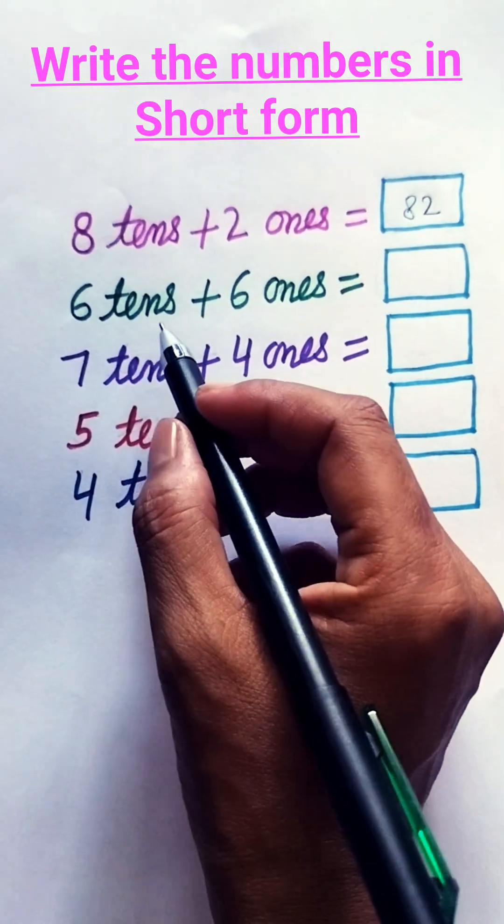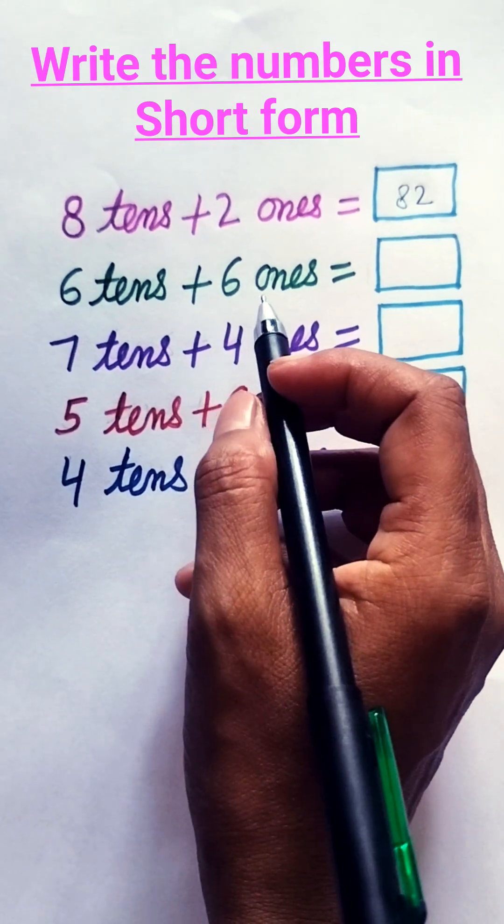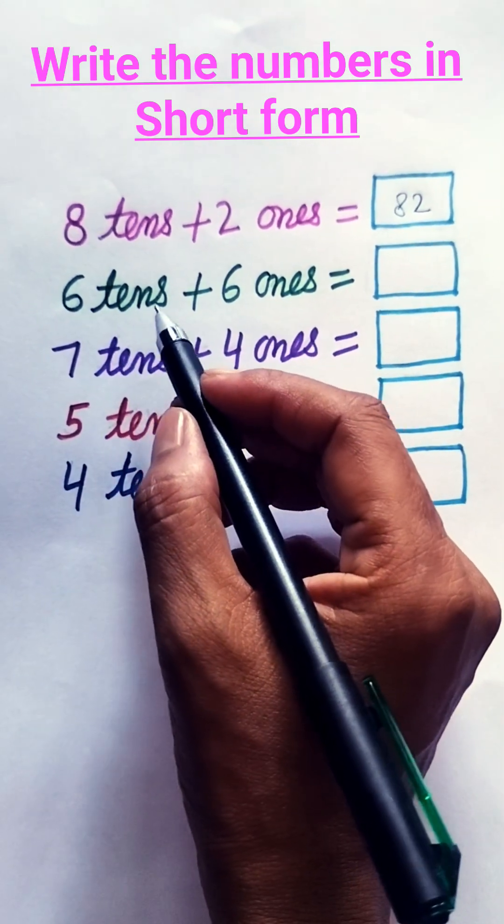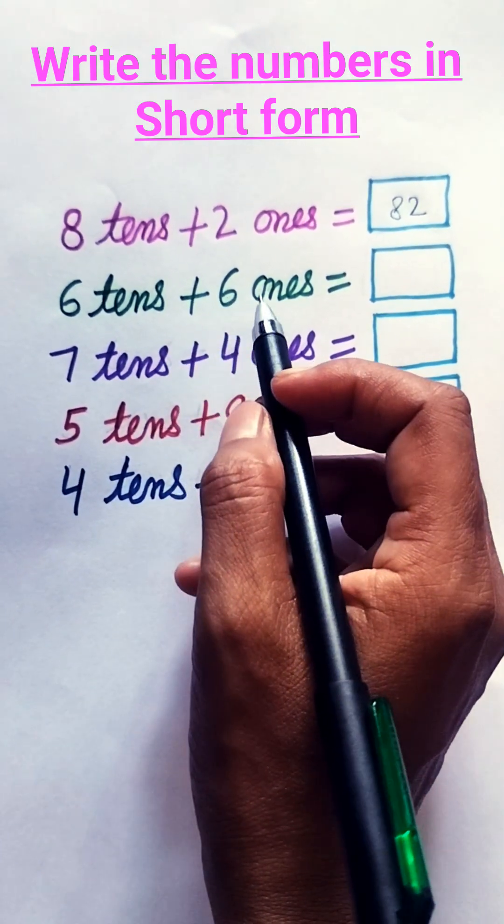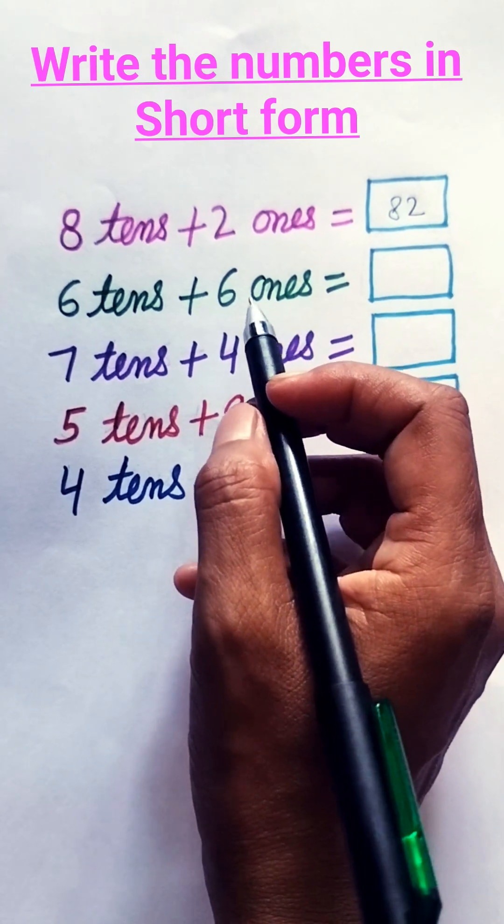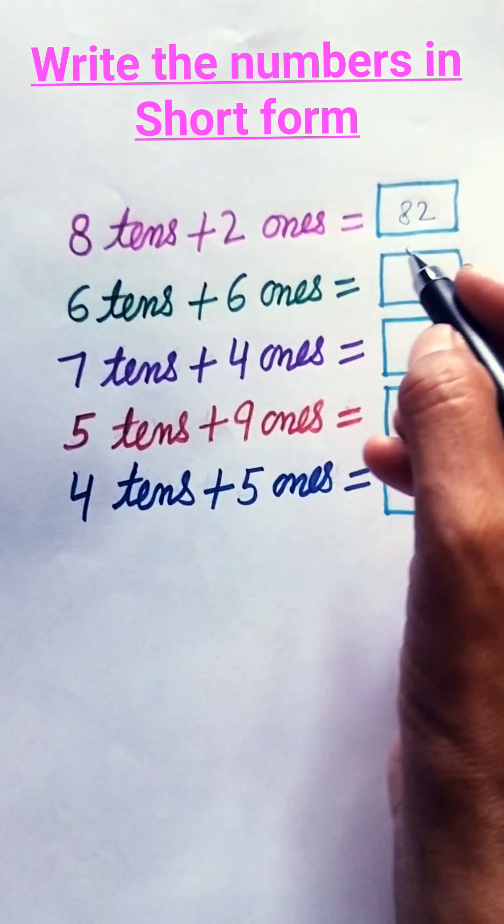Next, 6 tens plus 6 ones. 6 tens means 60, plus 6 ones means 6. 60 plus 6, 66.